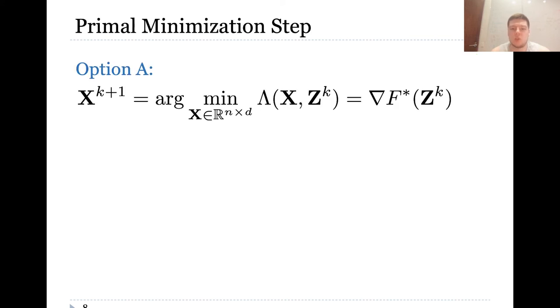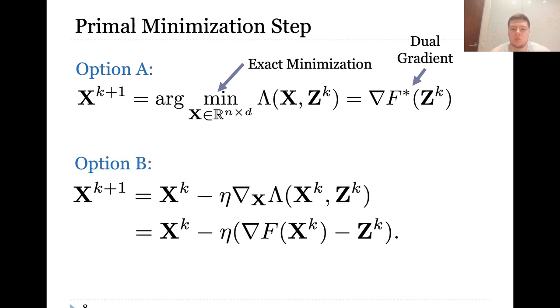There are two ways to perform a primal minimization step. Option A performs exact minimization in primal variable X which is equivalent to calculation of the dual gradient of F. Option B performs inexact minimization with a single gradient step.